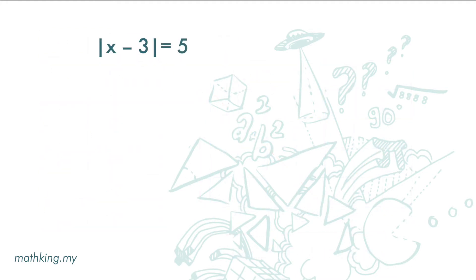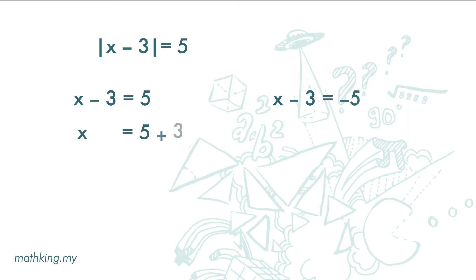If we have the equation — the absolute value of x minus 3 equals 5 — how do we solve this? We are going to make it into two equations: x minus 3 equals 5, and x minus 3 equals negative 5. For the first one, we get x equals 8. For the second one, we get x equals negative 2.